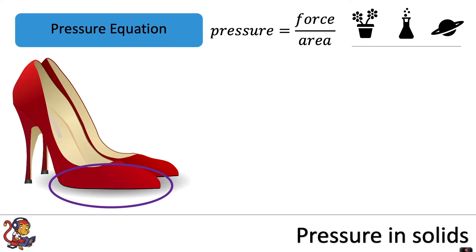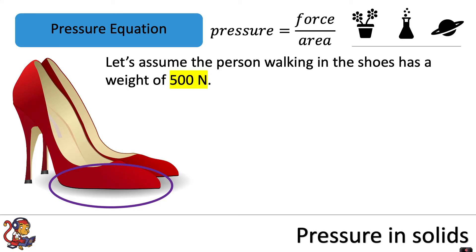Let's look at an example of how we can use this pressure equation. Let's assume the person walking in the shoes has a weight of 500 newtons. Let's assume the front of the shoe has an area of 80 centimeters squared.